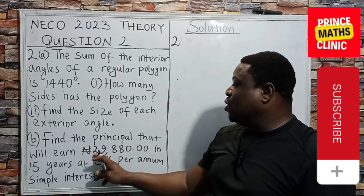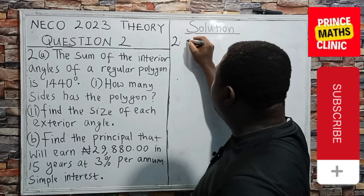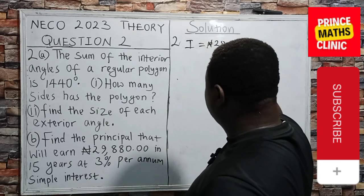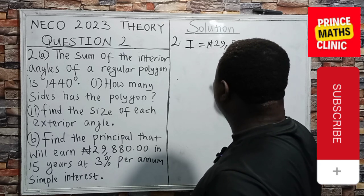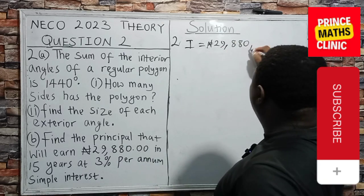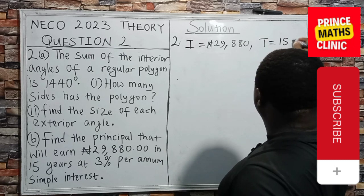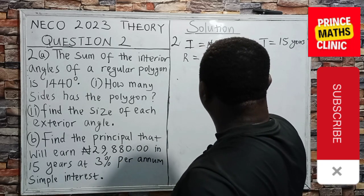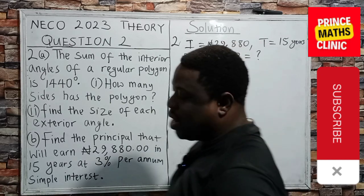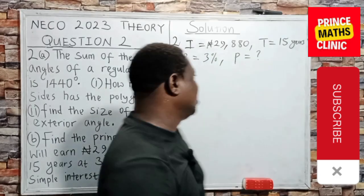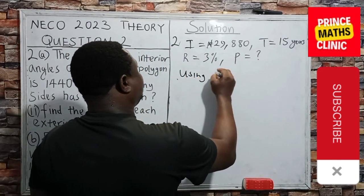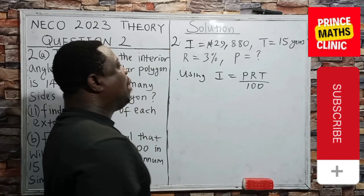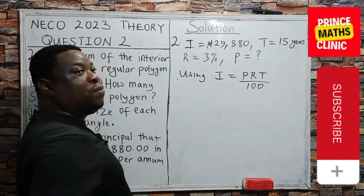Find the principal that will earn 29,880 naira. This happens to be the interest: 29,880 naira. The time is 15 years at the rate of 3%. But we're asked to find the principal. And we know the formula for interest. It's simply: Principal times rate times time all over 100. I want to find the principal. So I want to make P the subject of the formula. Therefore, if I cross-multiply, 100 will multiply I. It ought to what? P, R, T. P is multiplying R and T.